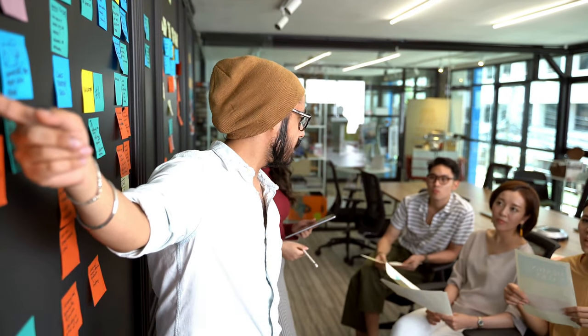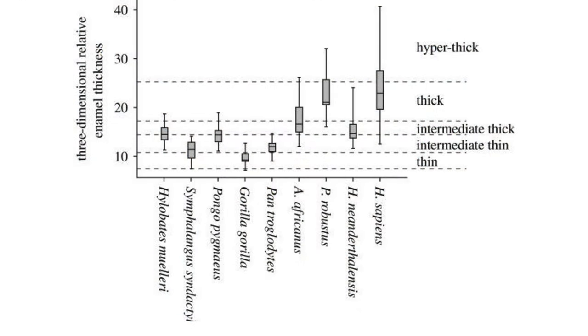After new discoveries led to a revised understanding of human evolution, scientists reflected on what had gone wrong. One key error was misinterpreting the significance of thick tooth enamel — originally thought to be a trait linking certain fossils to humans, it turned out to be an ancient characteristic shared by many species.